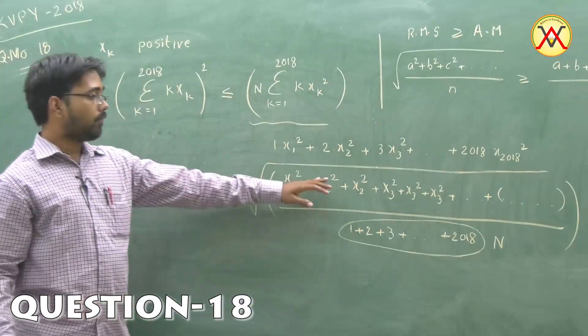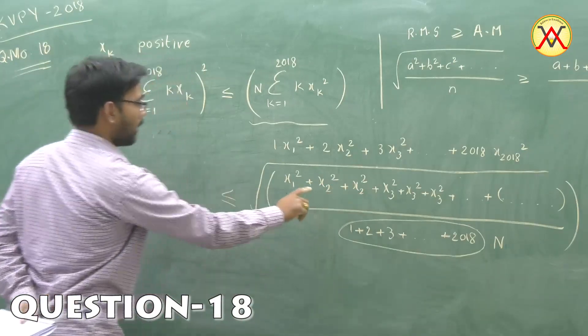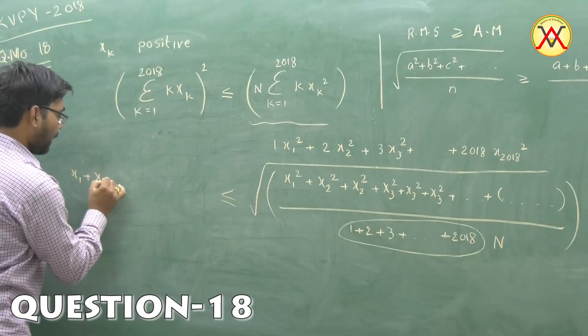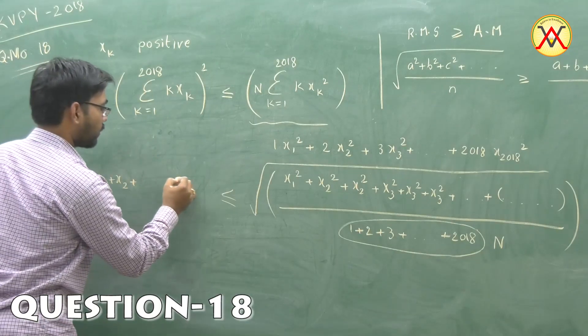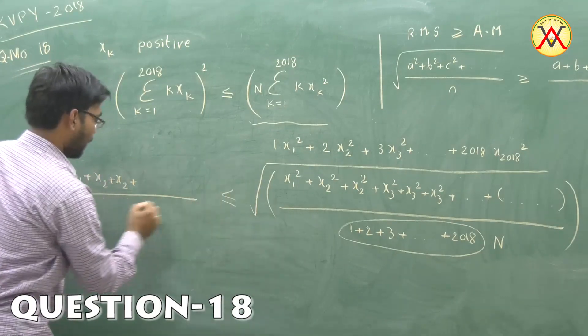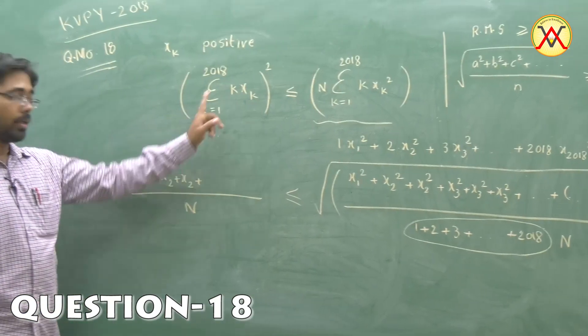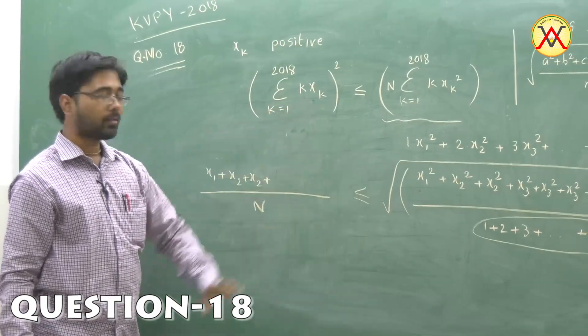The AM of x₁, x₂, and so on will be (x₁ + x₂ + x₂ + x₃ + x₃ + x₃ + ...)/N, which is the left-hand quantity, because x₁ comes 1 time, x₂ comes 2 times, x₃ comes 3 times.